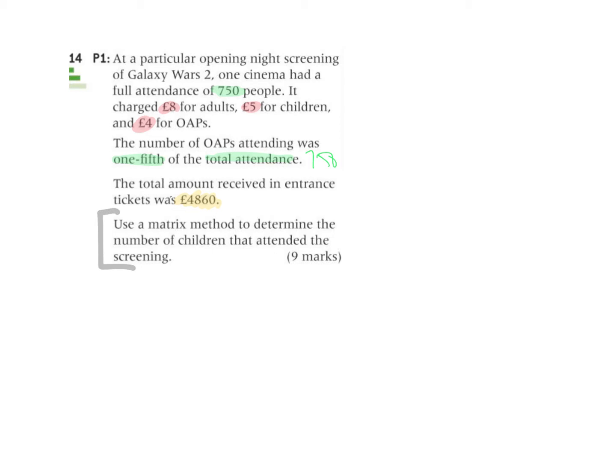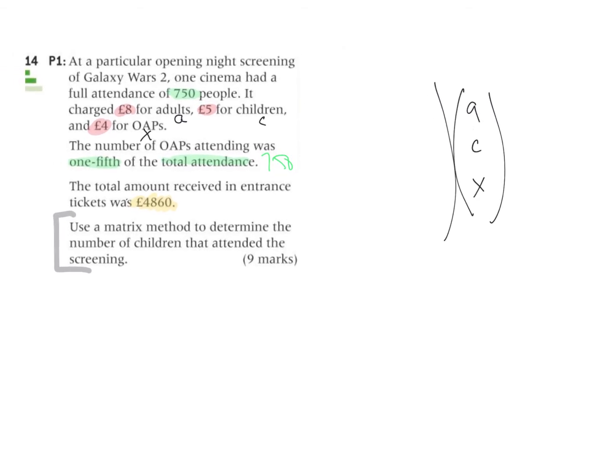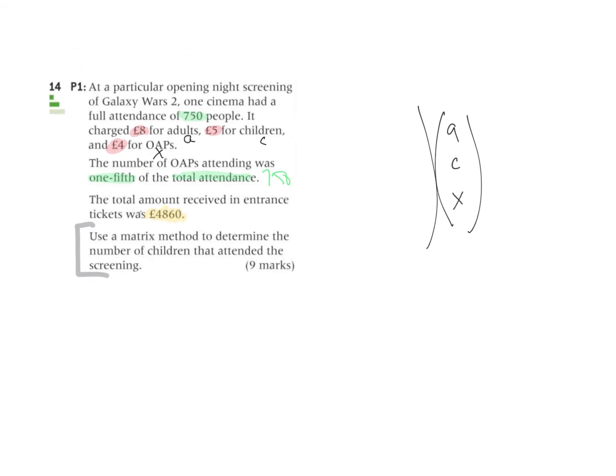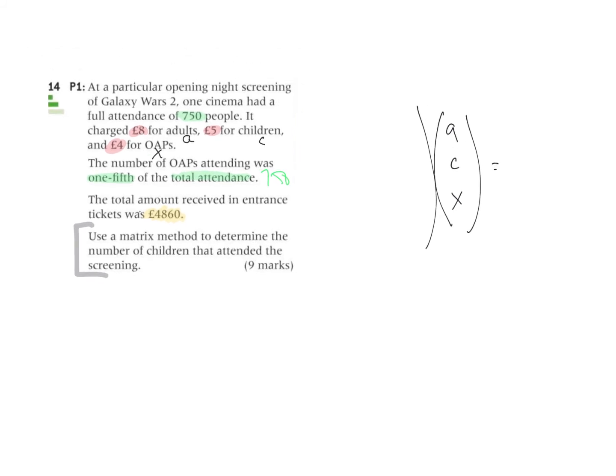Well, when I take a look at this, let's call this A for adults, C for children, and I'll call it X for OAPs. And so when I consider this, I have three variables: A, C, and X. And I have three equations. So I need three equations to actually find three variables.